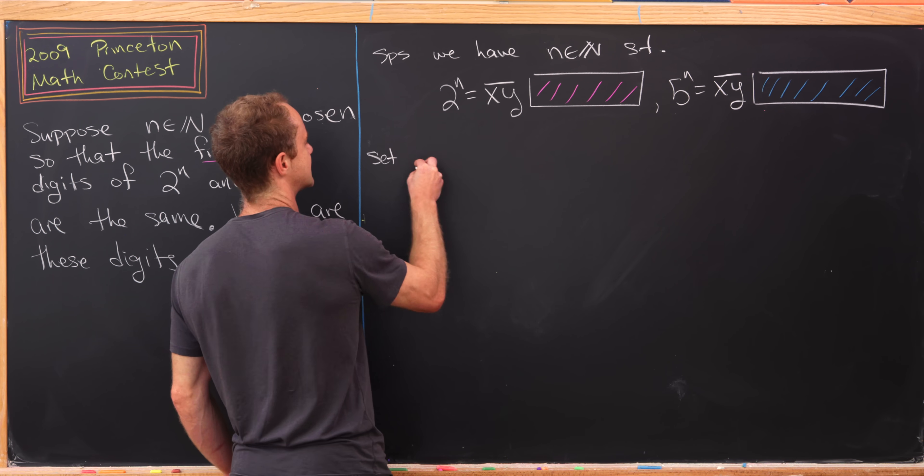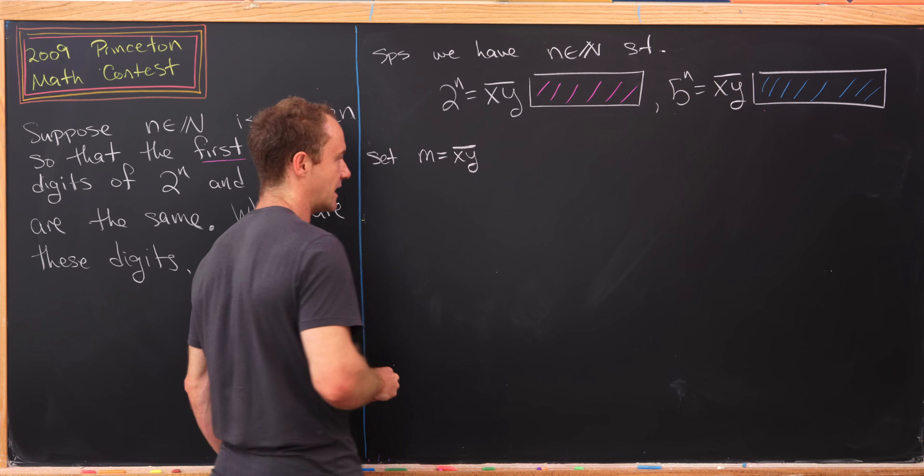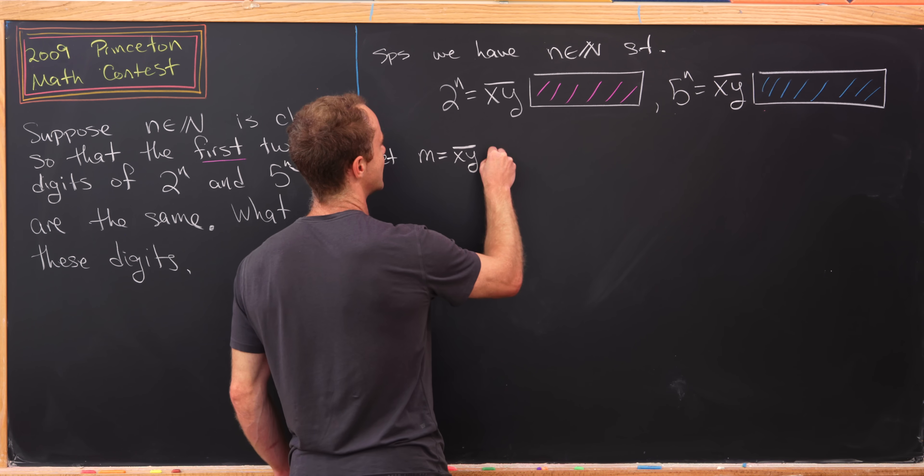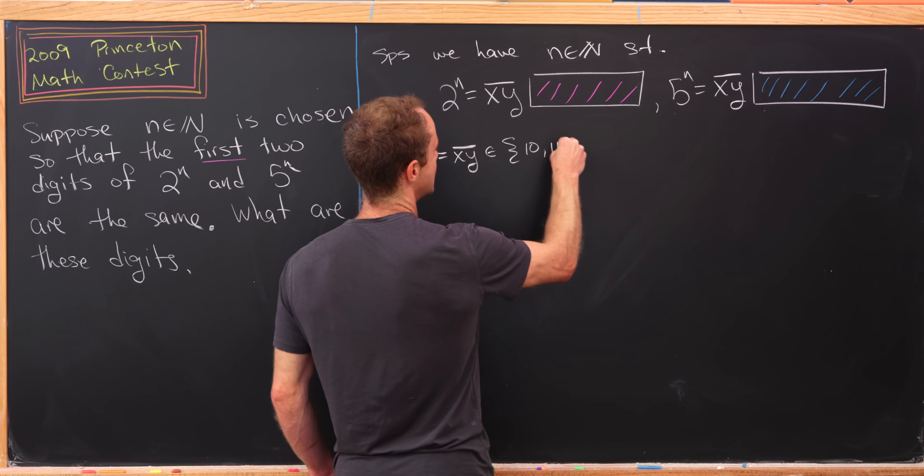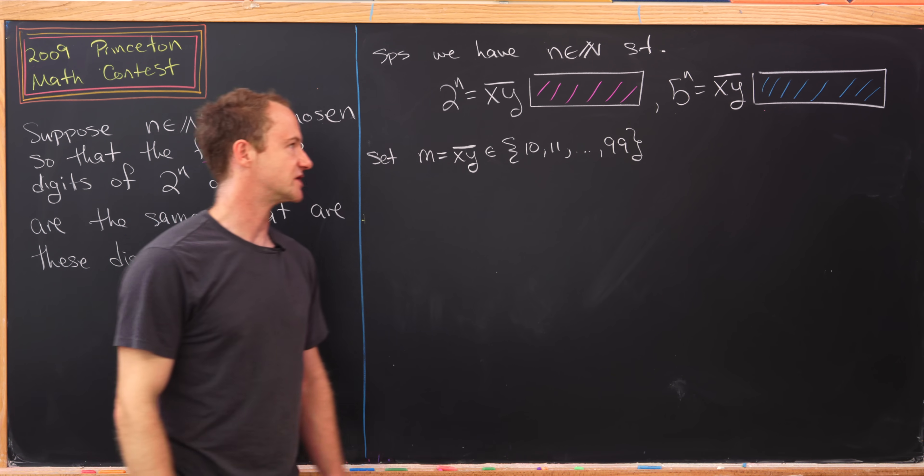Let's set m equal to xy, meaning digit x digit y. So this is a two digit number. We should say that m is this number which is between 10 and 99 because it's got to be two digits.